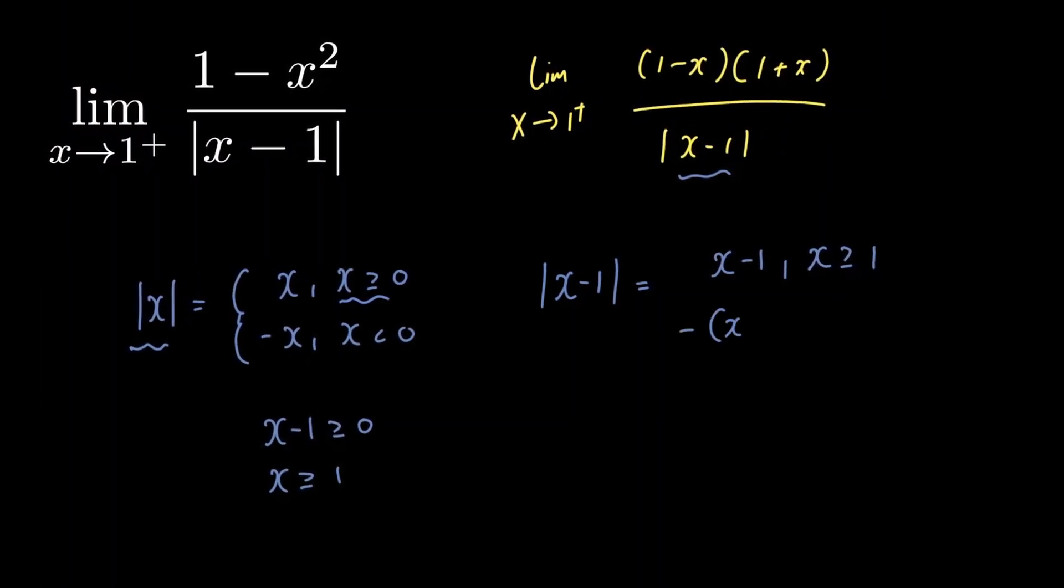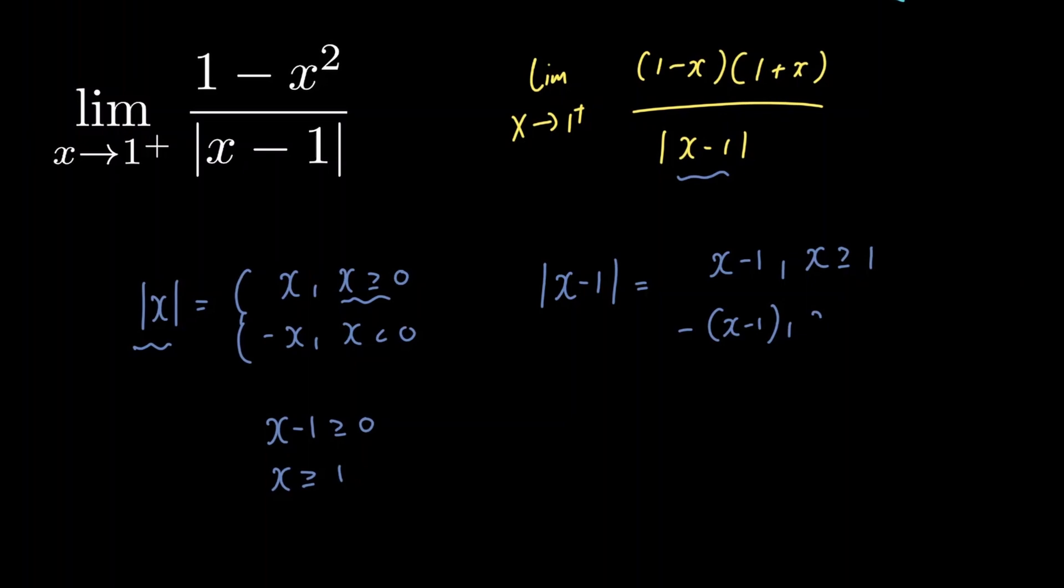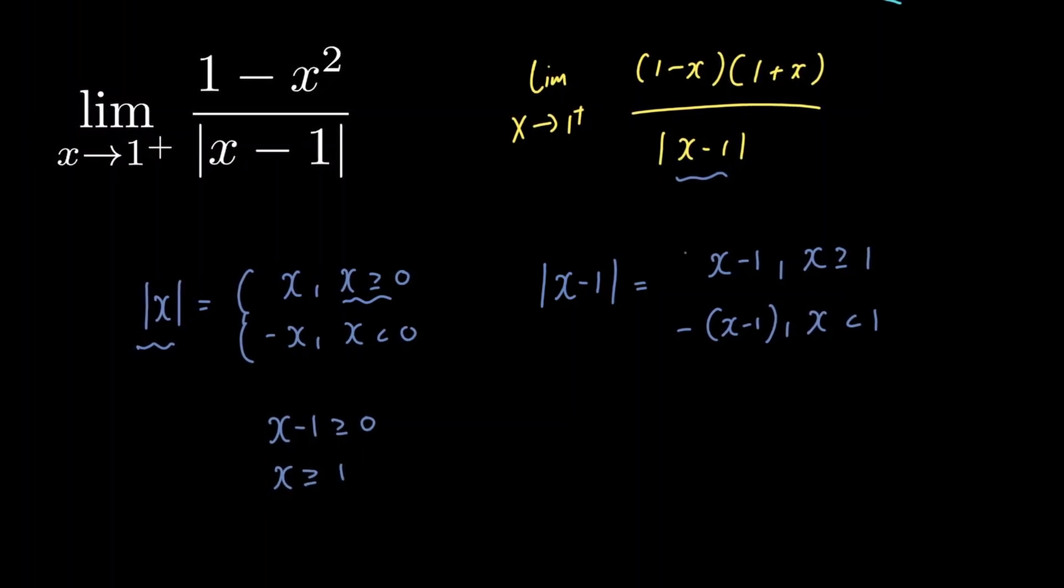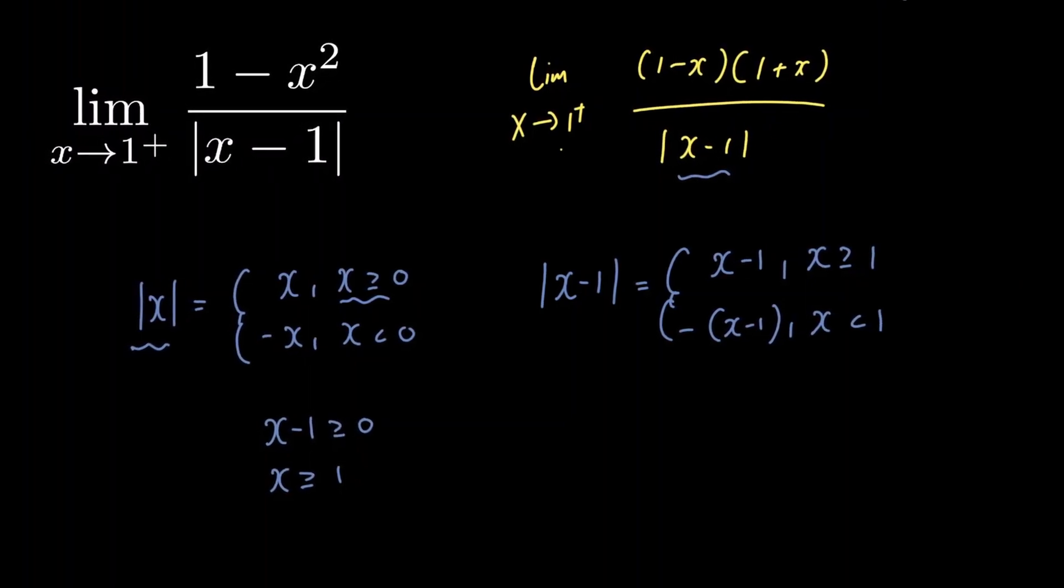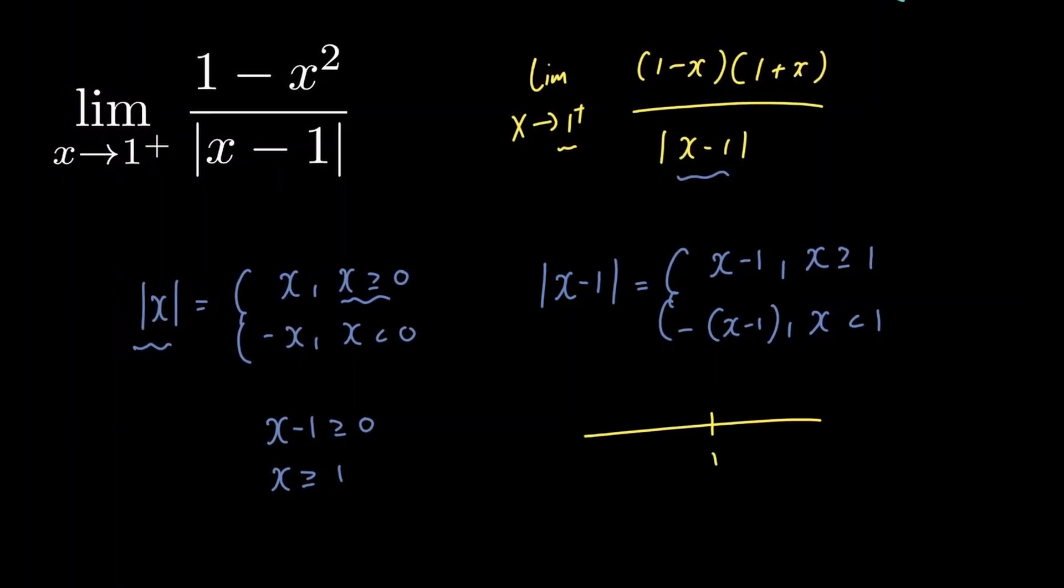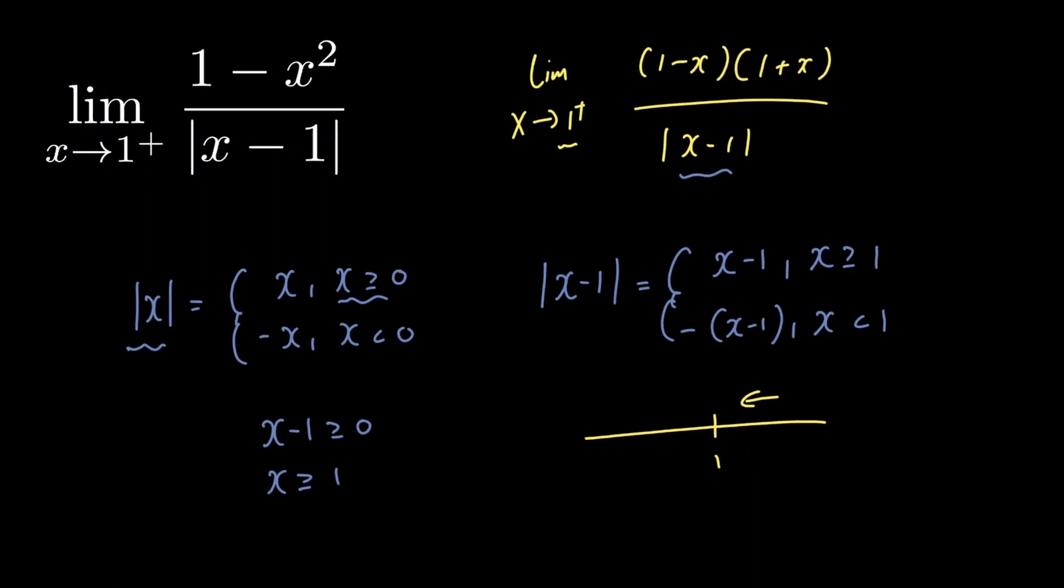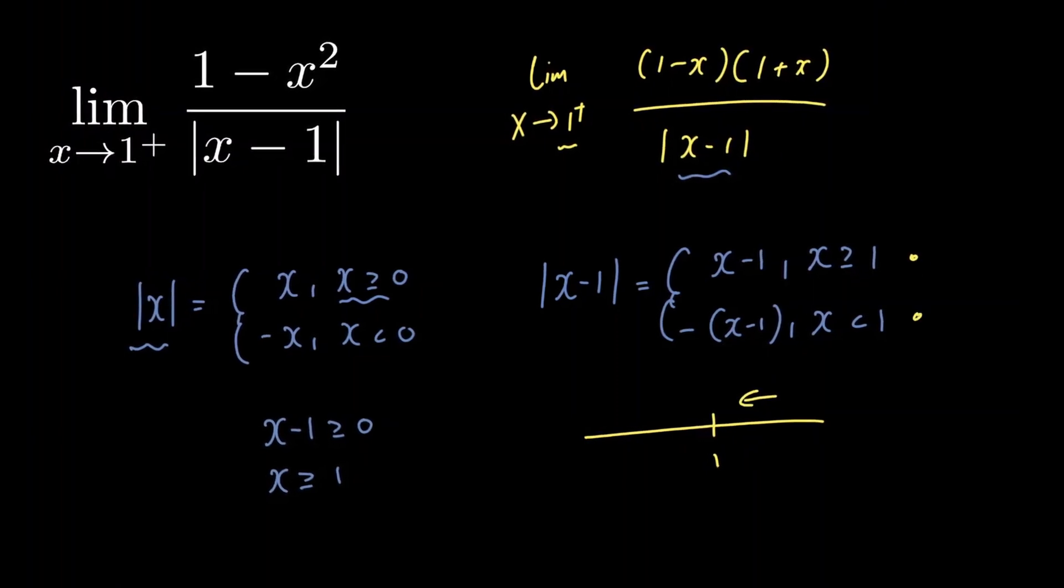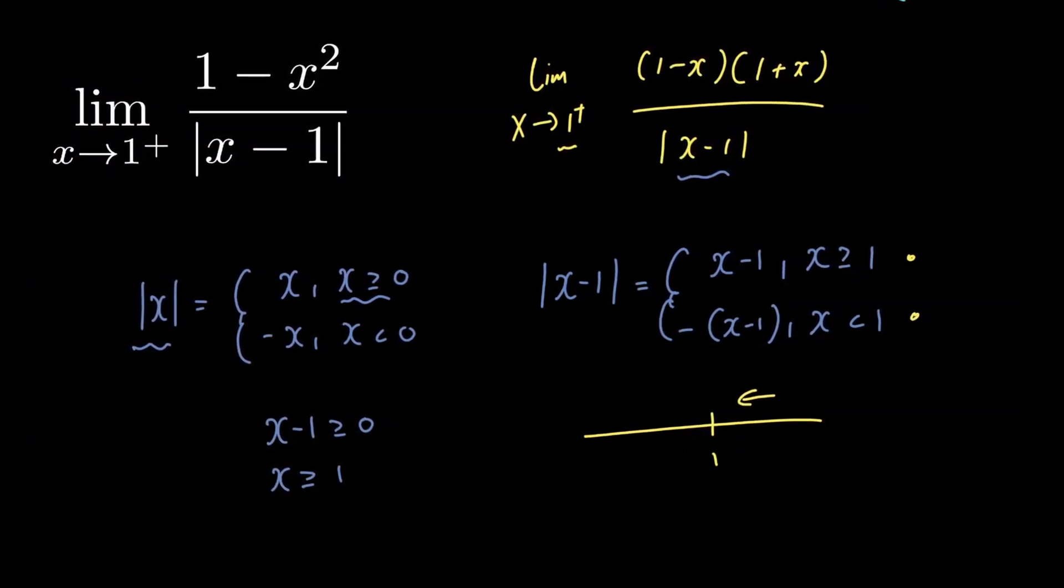And we have minus x minus 1 for x less than 1 for the same reason. Now in our limit, we're approaching 1 from the right. So if we imagine a number line, 1's here, and we're approaching 1 from the right, which of these two do you think our absolute value function is equal to in this case?